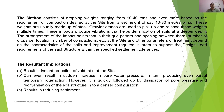The method consists of dropping weights ranging from 10 to 40 tons or more, based on the compaction required at the site. These weights are dropped from a set height of 10 to 30 meters and are usually made of steel. Crawler cranes are used to pick up and release these weights multiple times.